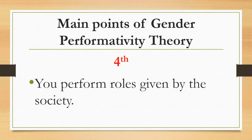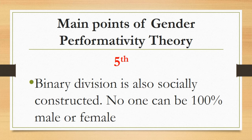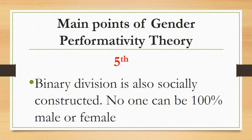The fifth point: binary division is also socially constructed — no one can be one hundred percent male or female. This point says that the division of gender into two categories, male and female, is man-made and not fully correct. It is not possible that a male is hundred percent male and a female is hundred percent female. They might have different feelings; sometimes a male may think like a female and vice versa — aspects of each gender can be witnessed in the other.